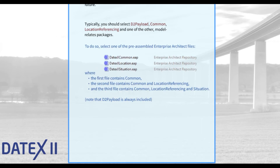You can use one of the pre-assembled Enterprise Architect files: DTX2 Common, DTX2 Location, or DTX2 Situation. The first one only contains Common. The second is pre-assembled and contains Common and Location Referencing. The third already contains all three — Common, Location Referencing, and Situation. Note that the D2 Payload namespace is always included.